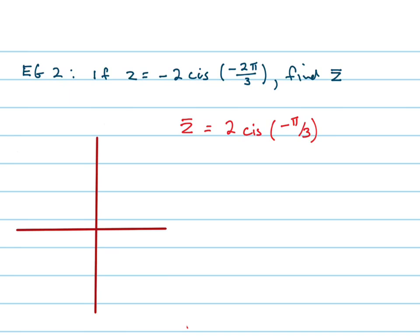Let's try this one. A bit more thought required, but not much more thought. We've got a complex number defined as negative 2 cis negative 2 pi on 3. We've got to find the conjugate.